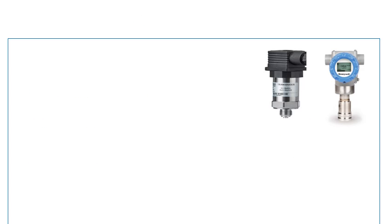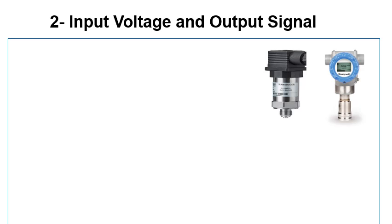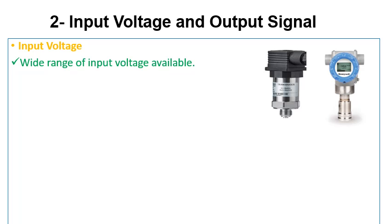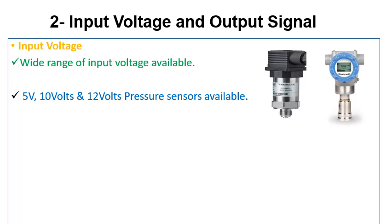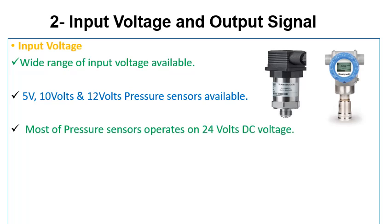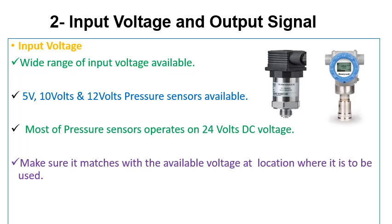The next parameters we will discuss are input voltage and output signal. Pressure transmitters are available with a wide range of input voltages — 5V, 10V, 12V, and 24V sensors are available. Most pressure sensors operate on 24V DC. Please check the operating voltage of the selected pressure transmitter and make sure it matches the available voltage at the installation location.